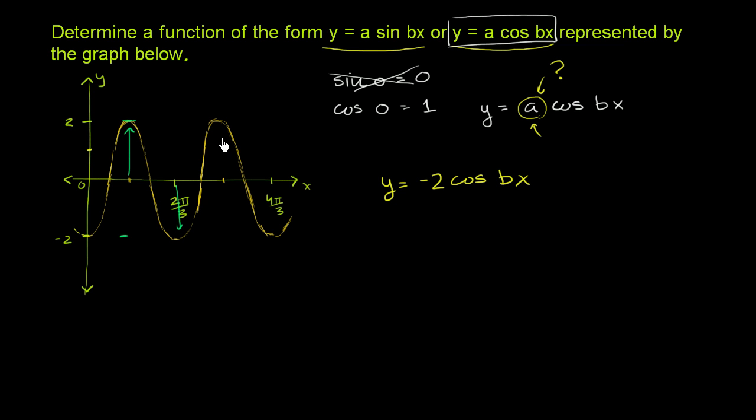Or another way you think about it, we're varying 2 from this center point. And over here, if you think about the amplitude, the amplitude is the absolute value of this number right over here. The amplitude is equal to the absolute value of this negative 2, which is indeed equal to 2.